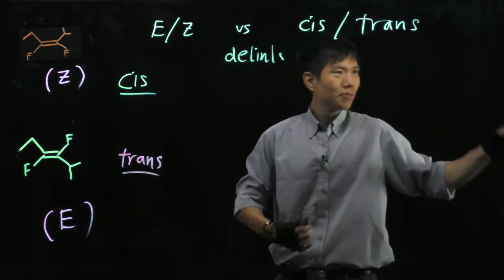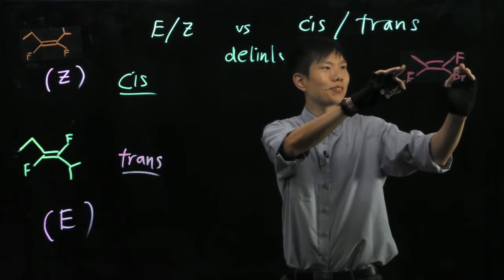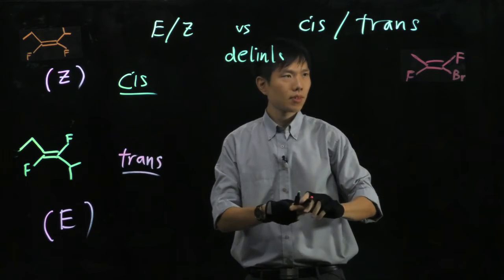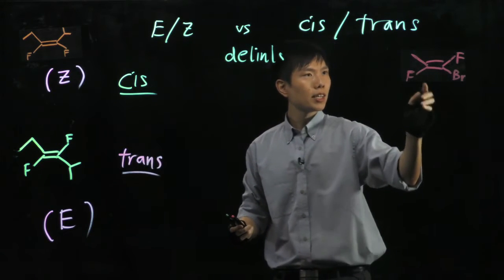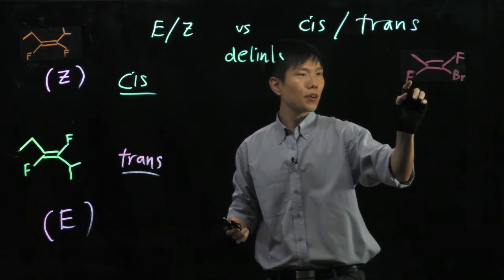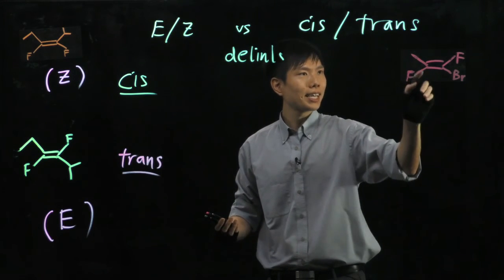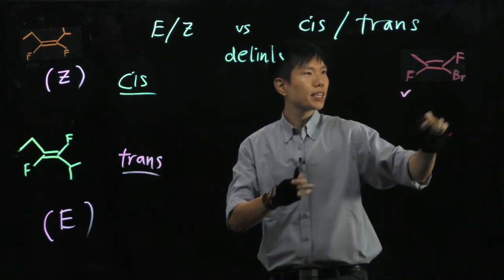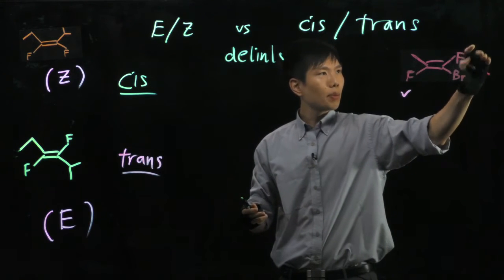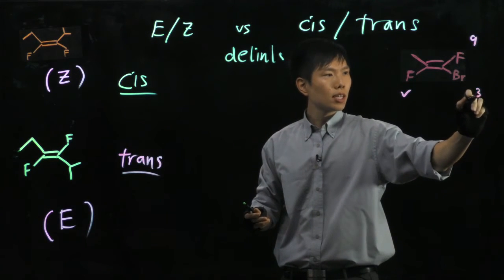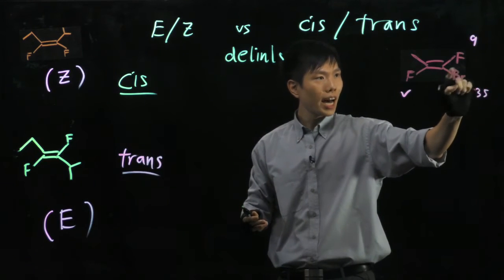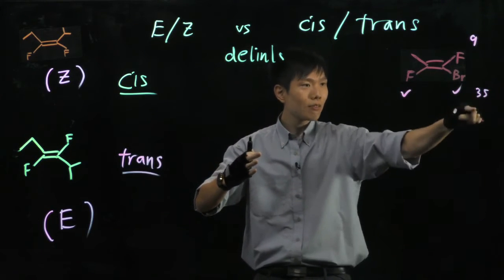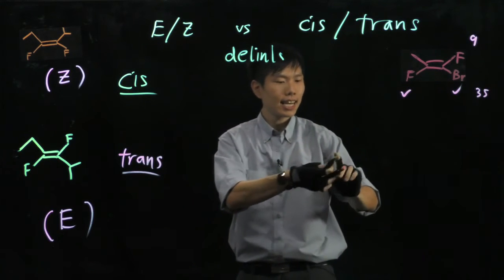If you take a look at this example here — that molecule — let's determine whether it's E or Z. We cut across this carbon-carbon double bond: carbon here against fluorine. Fluorine has a high atomic number of 9 against carbon, which is 6. So higher priority at the bottom. Fluorine has atomic number 9; Bromine has atomic number 35. So Bromine is of higher priority on that side. Since the high priority groups are on the same side, this is a Z isomer.